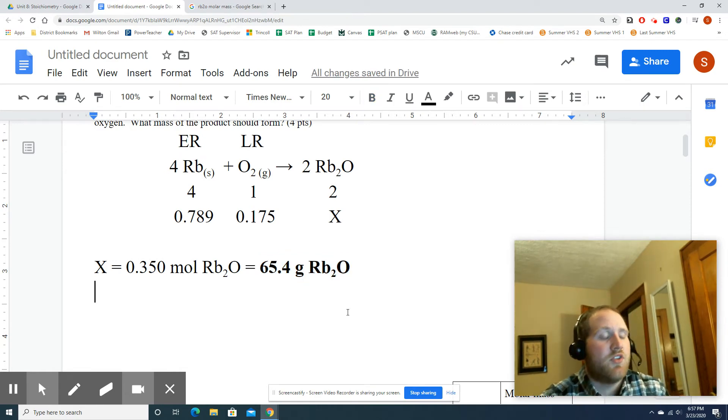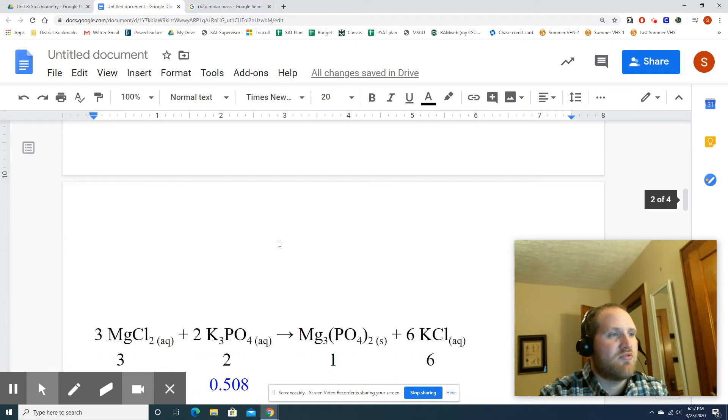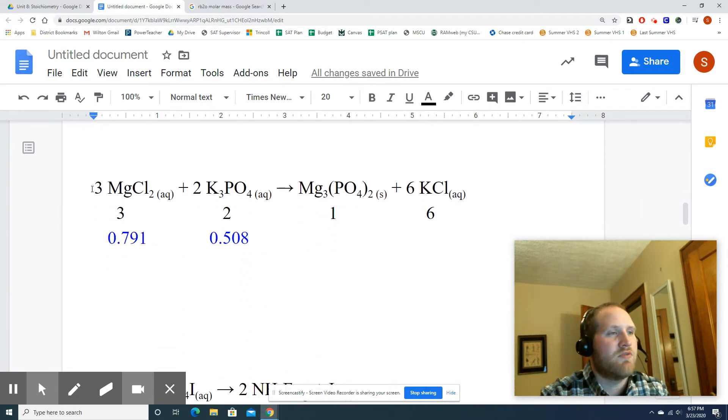All right. So there's my first question. So again, the only new thing here is if you're given both reactants, meaning the amounts of this reactant and this reactant, you can't just pick your favorite. You have to find the limiting reactant. And to do that, you divide the moles you have by the coefficient, divide the moles you have by the coefficient. Whichever of those gives you the smaller number, that's your limiting reactant.